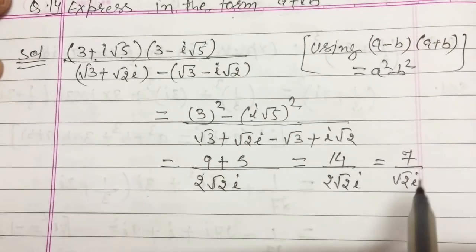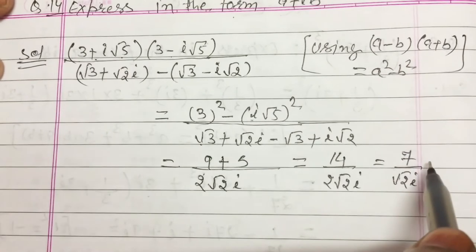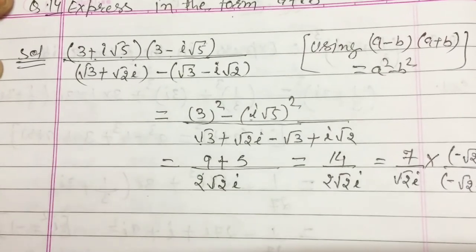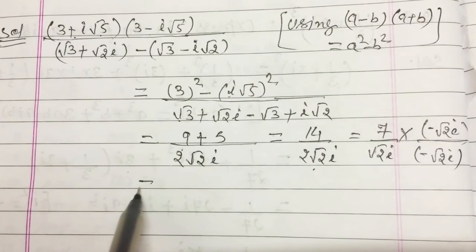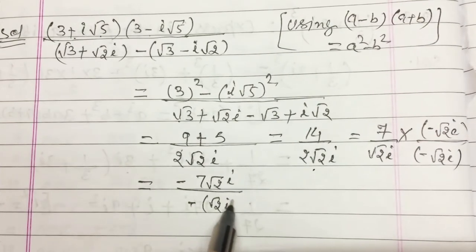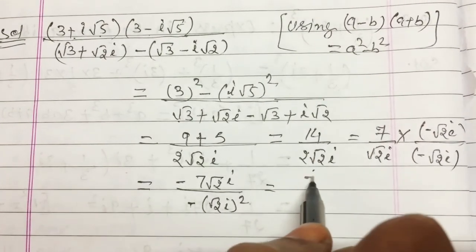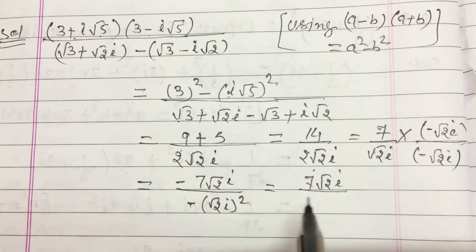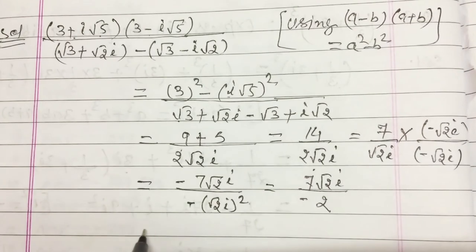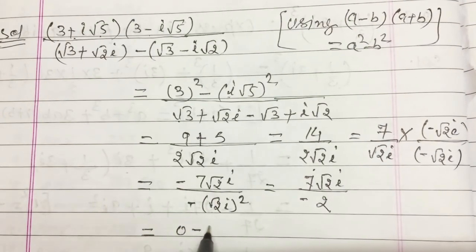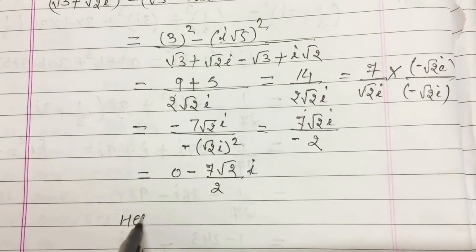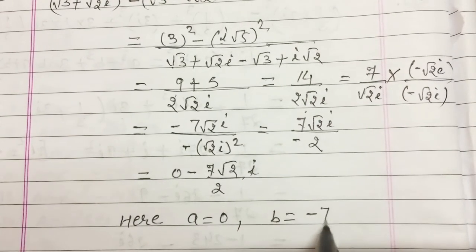Since i is in the denominator we have to rationalize it. Multiply with −√2 i and divide by −√2 i — take the opposite sign of the denominator. You will get −7√2 i in the numerator and (−√2 i)² = 2i² = −2 in the denominator. The minus signs cancel, giving 7√2 i / 2. Wait — simplifying: it is 0 − 7√2/2 · i. In standard form a + ib, a = 0 and b = −7√2/2.